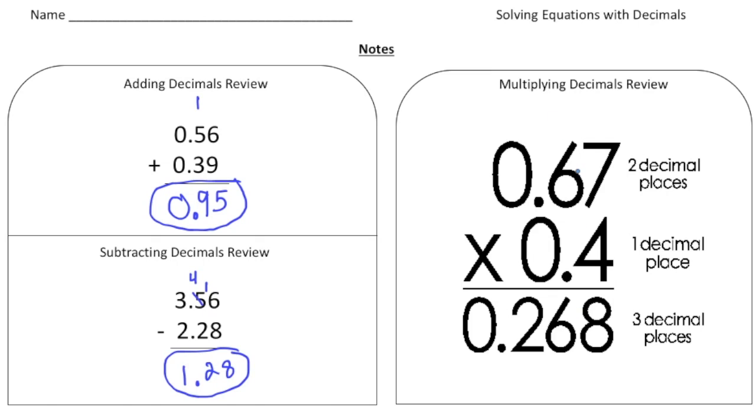Now the rules for multiplying are completely different than when you're adding or subtracting. So here we have 67 hundredths times 4 tenths. And I've given you the answer. So the question is how do we get 0.268? Well, you do 4 times 7, which is 28, and that's where we had to carry a 2. And then 4 times 6 is 24, plus 2 gives you the 26.